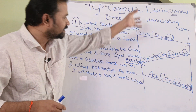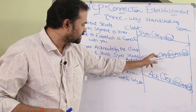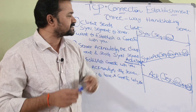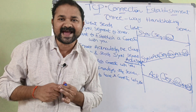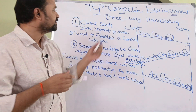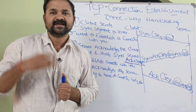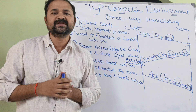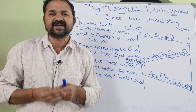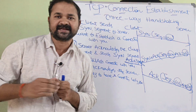We have three steps in total — first step, second step, third step — which is why we call this three-way handshaking. For connection establishment, TCP uses three-way handshaking. In the next video, we will see how data transfer is done as well as how the connection will be terminated.